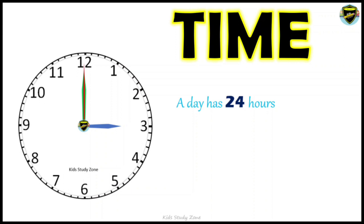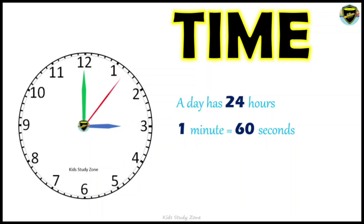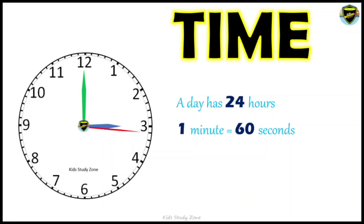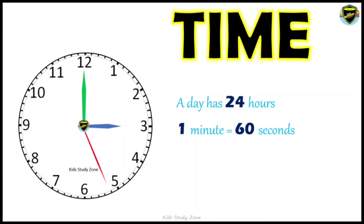A day has 24 hours. One minute is equal to 60 seconds. You can see the red needle — it keeps moving from 12 and comes back to 12, completing one circle. That one circle is one minute, and in that time we have 60 seconds. From 12 to 1 you can see five markings — those represent five minutes.